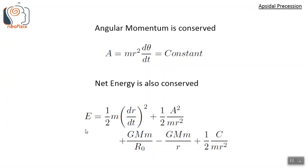The net energy E is also conserved. E equals half·m·(dr/dt)² — this is the radial kinetic energy term — plus half·A²/m·r², which is the rotational kinetic energy term, where A is the constant angular momentum. Then there is a constant term (GMm/r₀), and the familiar gravitational potential energy term −GMm/r. There is also an additional energy term: half·c/(m·r²).